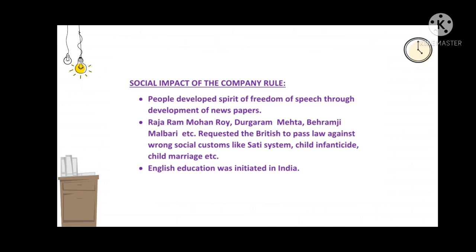Our next topic is the social impact of company rule. Before the British came to India, people were not aware of the importance of freedom of speech, as they lived simple lives and never felt the need to speak against anything. But during British administration, the spirit of freedom of speech and thought developed among the people through the development of newspapers. At that time, wrong customs like the Sati system — where widows sacrificed themselves — female infanticide, and child marriage were also prevailing in society. Raja Ram Mohan Roy, Durga Ram Mehta, Behramji Malabari and others requested the British to pass laws against these wrong practices.